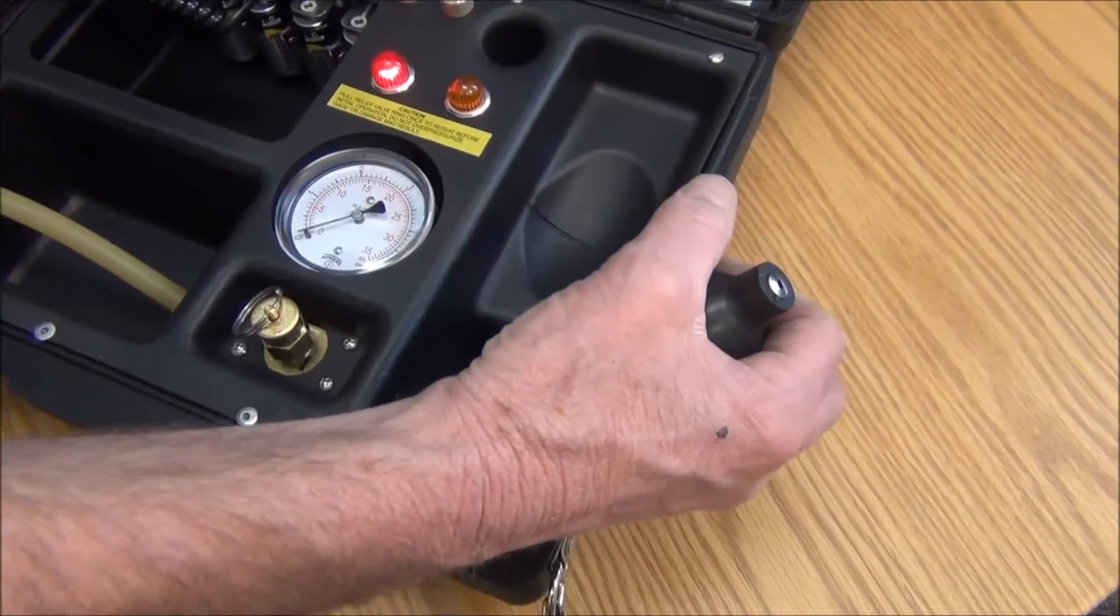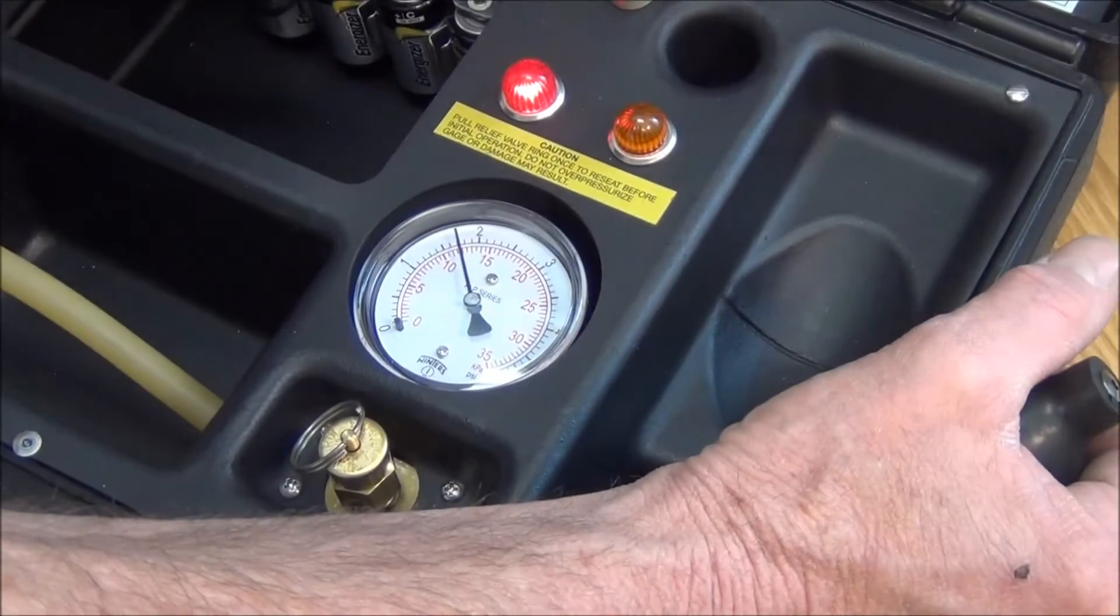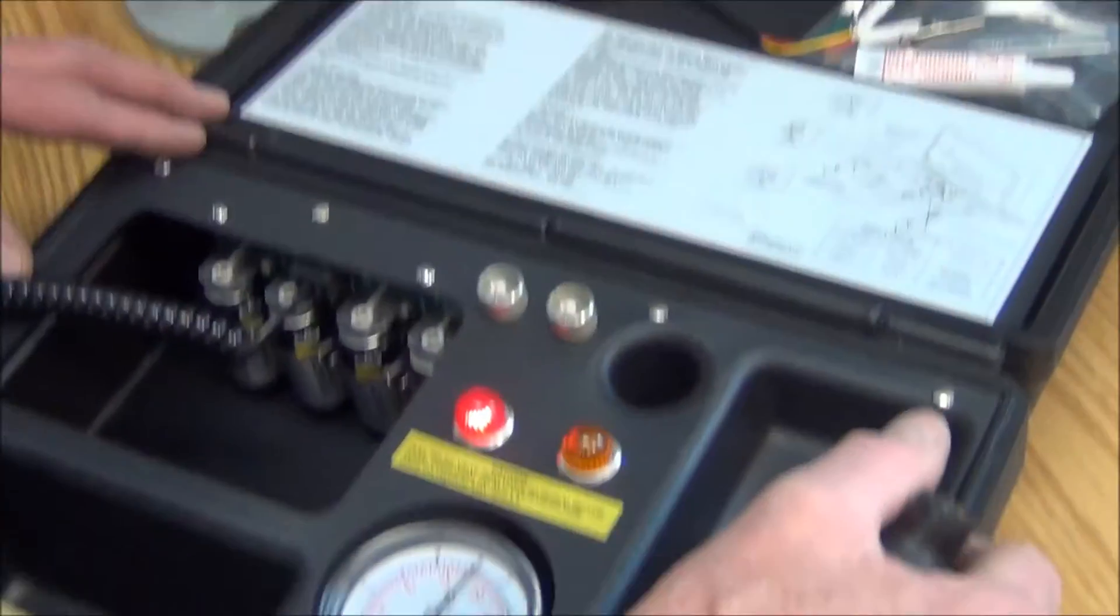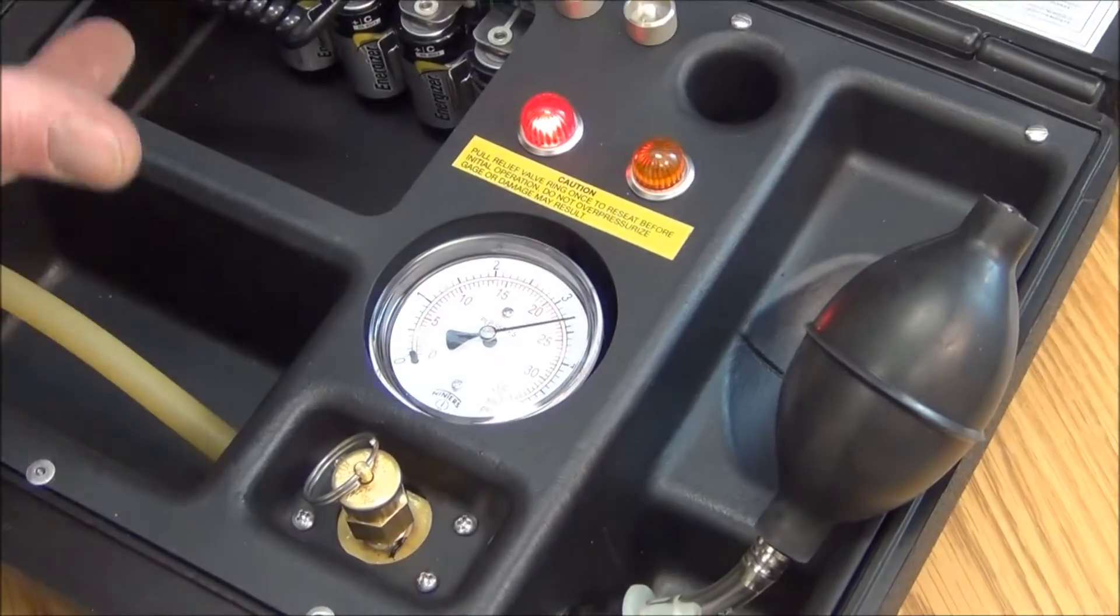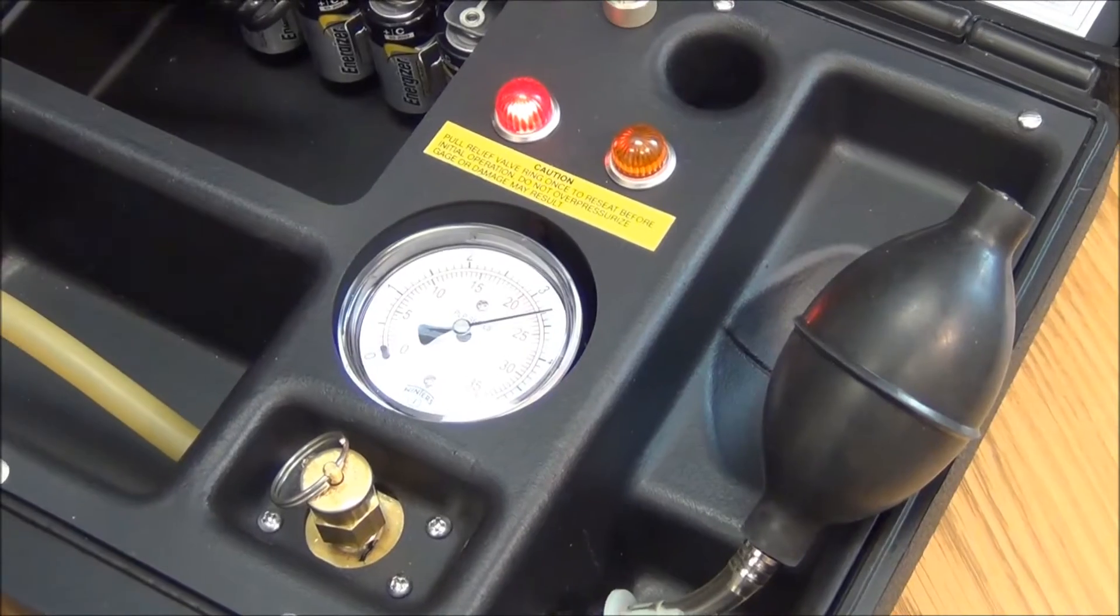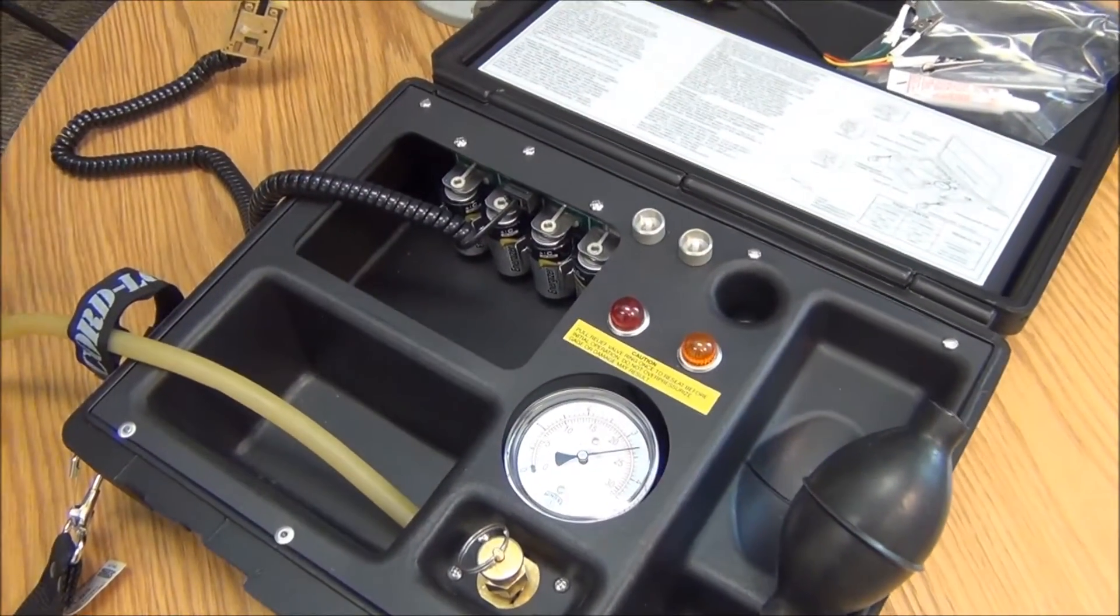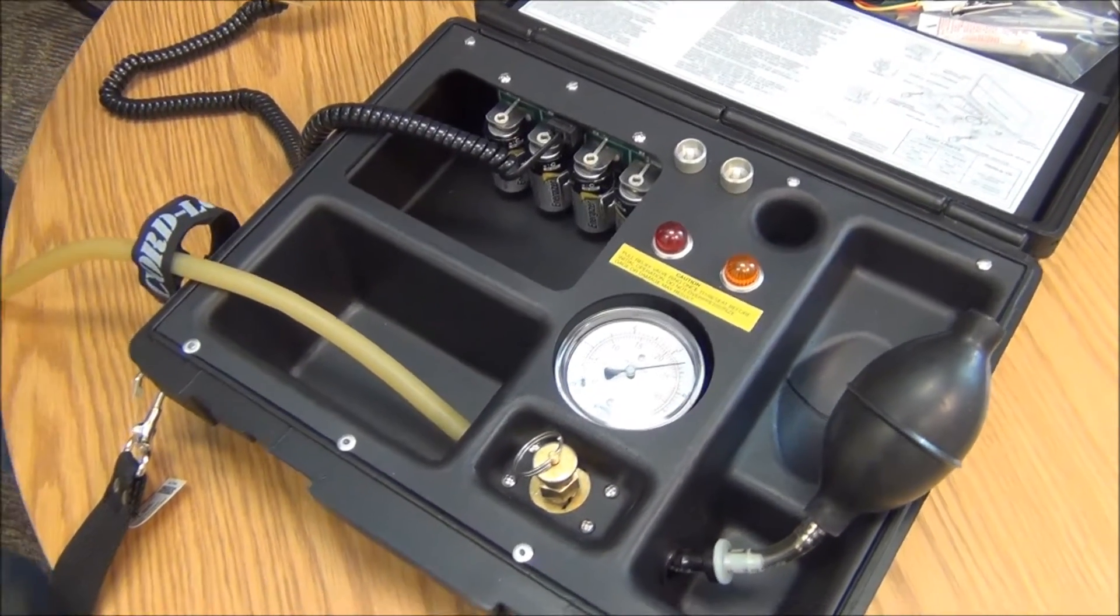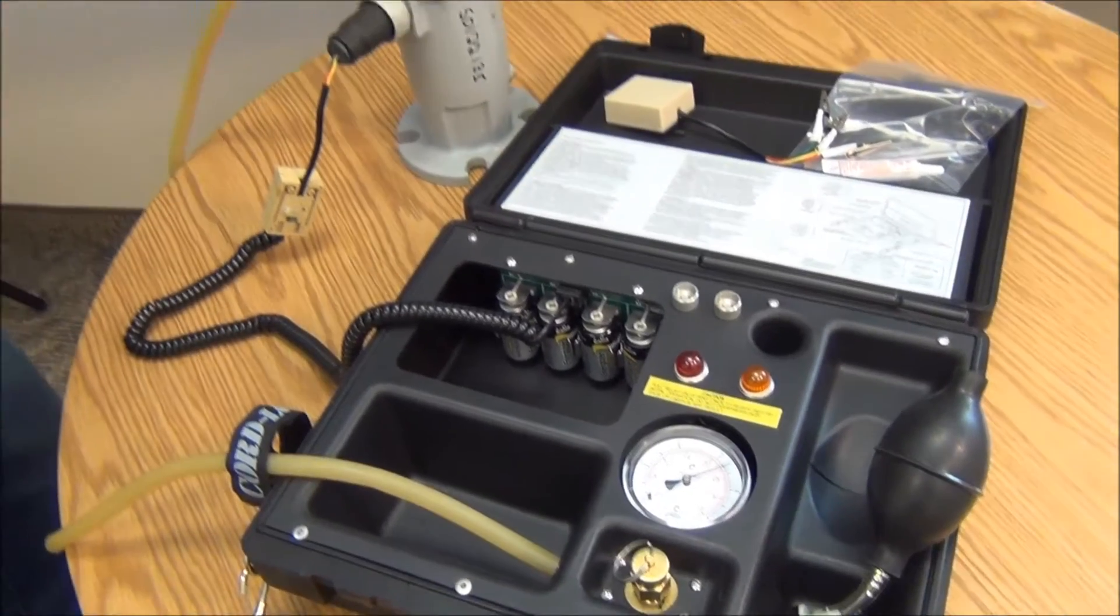The next step is to take this squeeze bulb. There's a chart on our instruction sheet to tell you what pressure to run this up to. For a 900, it's between 3.25 and 3.5 PSI, which I've reached. Once you reach that, you push the right button and the timer comes on for about 60 seconds. You have to wait 60 seconds to let the unit stabilize.